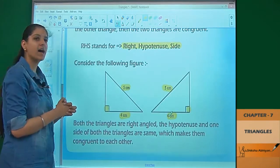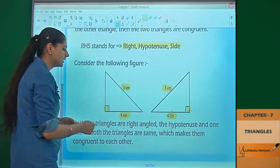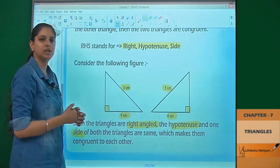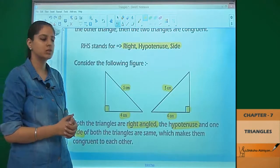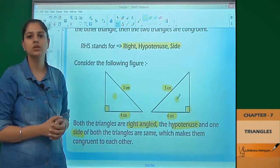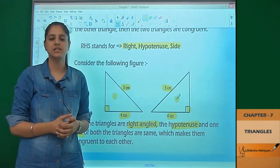So by RHS congruence rule, that means their right angles, their hypotenuses, and one side are equal. By RHS congruence rule, we can say that this triangle and this triangle are congruent to each other. Let us move on and see some examples.